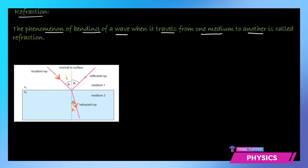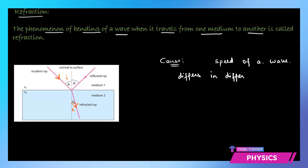What is the cause of refraction? The cause is simply that the speed of a wave is different in different media. When traveling in air it moves fastest, and when it enters glass, water, or oil, the speed of the wave differs. The difference in speed of a wave in different media is what causes refraction.